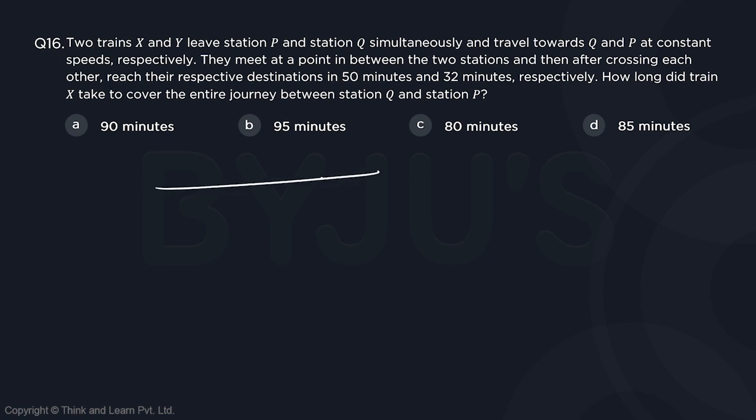So we have two stations P and Q and there is a train X that starts from P and moves towards Q while train Y starts from Q and moves towards P. They meet at a point in between the two stations and then after crossing each other, suppose they meet at a point somewhere over here, which may be the midpoint, which may not be. Right now we don't know.